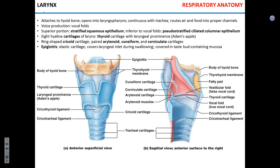Once air has gone through the nasal cavity, nasopharynx, oropharynx, and laryngopharynx, it enters the chamber called the larynx. The larynx is attached to the hyoid bone, which is the only bone in the human body that does not articulate with any other bone — it is basically suspended in tissue.